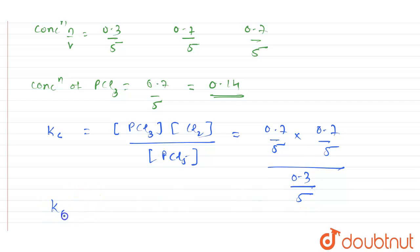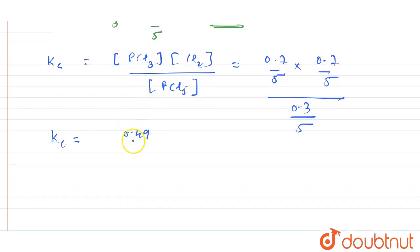When you do the calculation, the Kc value you are going to get is 0.49 divided by 25, the whole divided by 0.3 divided by 5. When you do this, the 5 and 25 will get canceled and 5 will remain.